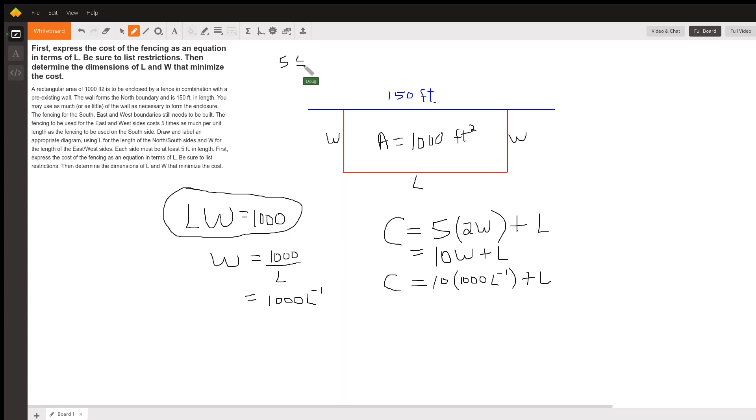L is between five and really it can't be 150 because if it was 150, we wouldn't have anything left for W.